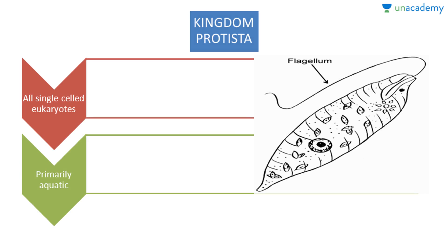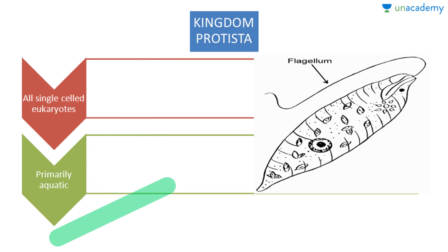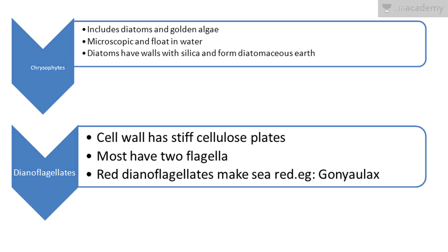Next is Kingdom Protista, which consists of all single-celled eukaryotes. They are primarily aquatic. The first group is chrysophytes, which include diatoms and golden algae also known as desmids. They are microscopic and float in water. Diatoms have cell walls containing silica and form diatomaceous earth, which is very important from an exam perspective.